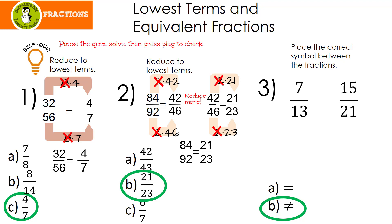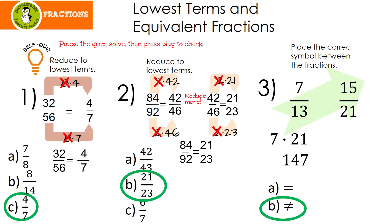Let's look at our last one. Hopefully you remembered that we're going to cross multiply. 7 times 21 is 147. 13 times 15 is 195. 147 is not equal to 195. That means that 7 thirteenths is not equal to 15 over 21 — they don't have the same measure. If we were shading a circle, they wouldn't be shading the same amount of space.